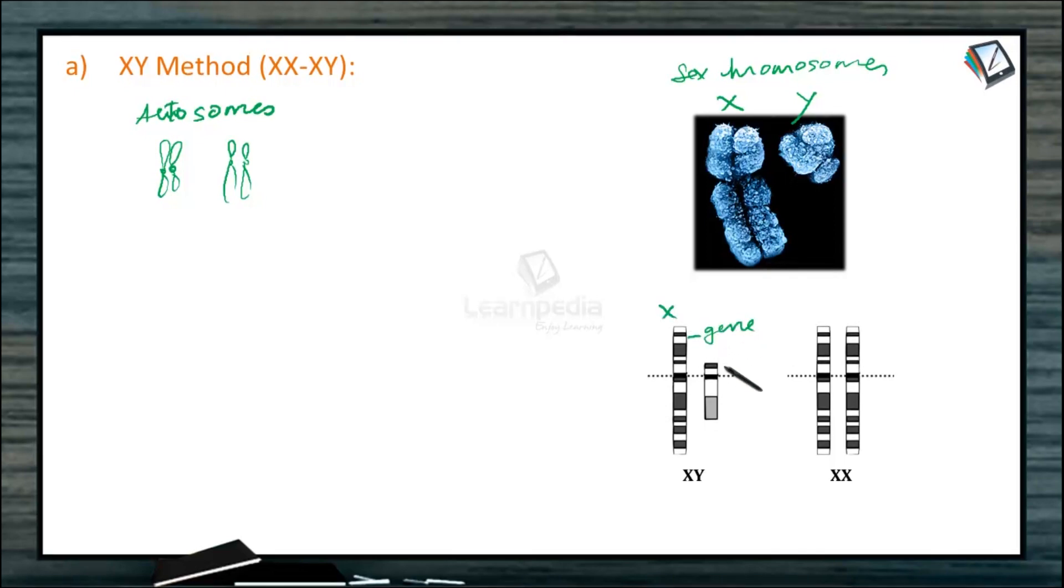This is the X chromosome. This is the Y chromosome, and here the number of genes present in the Y chromosome is less, whereas the number of genes that are attached to the X chromosome is more. Now all the genes present in the X chromosome need not be for determining the sex. There may be other somatic characters that are also determined by the X chromosome.